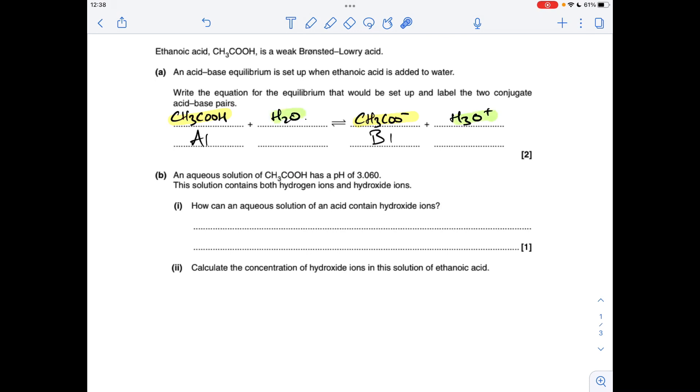H2O is obviously accepting the proton from the ethanoic acid, so it's acting as a base. This can donate a proton and go back to that, so this is the acid, so these will be pair 2.